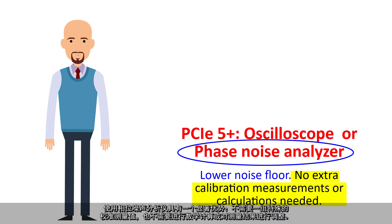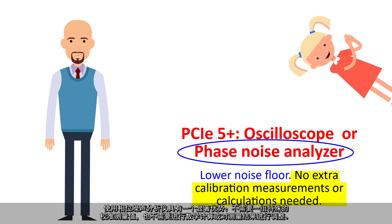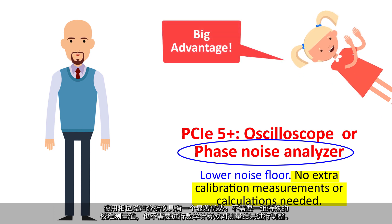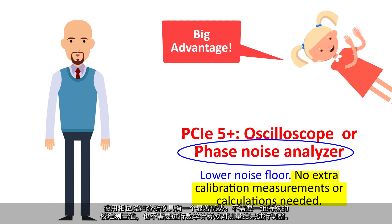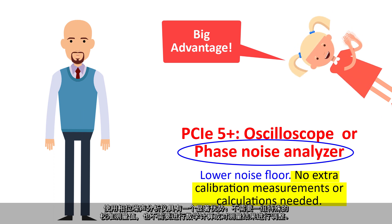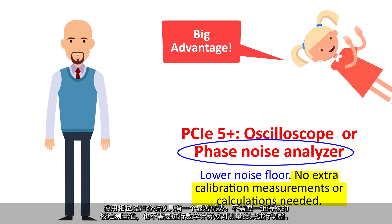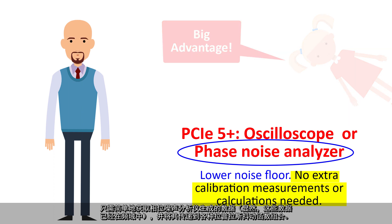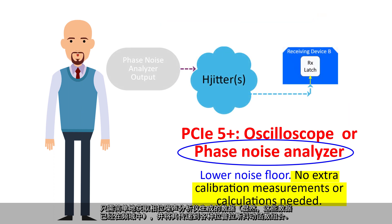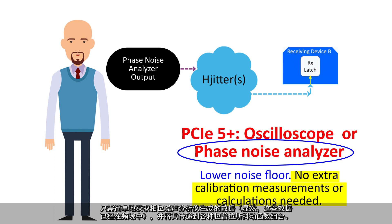There is a significant advantage to using a phase noise analyzer. There is no need for a special set of calibration measurements, and there is no need to mathematically calculate and apply adjustments to the measured results. We can simply take the data produced by a phase noise analyzer, which of course is in the frequency domain already, and pass it through the various Laplace jitter function combinations.